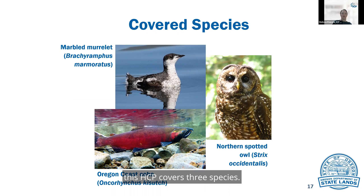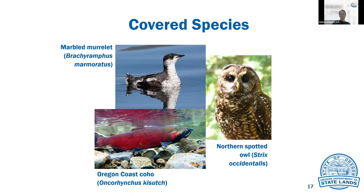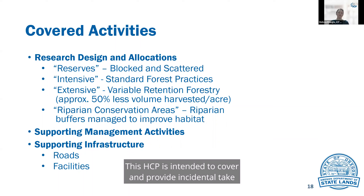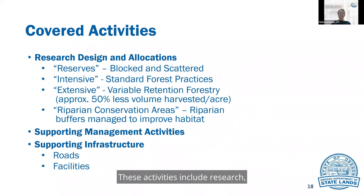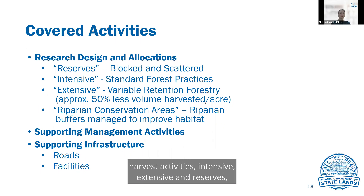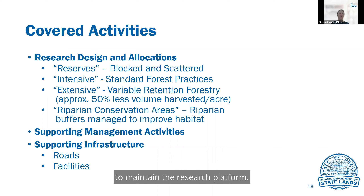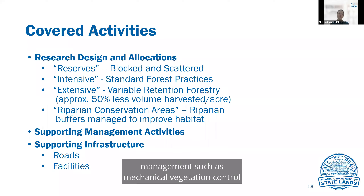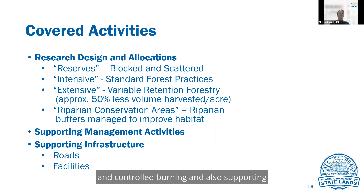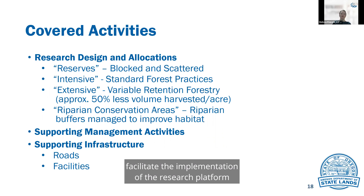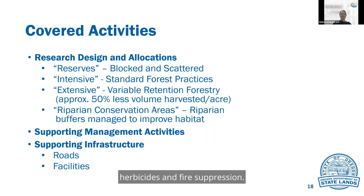Based on those criteria, this HCP covers three species: marbled murrelet, northern spotted owl, and Oregon coast coho. This HCP is intended to cover and provide incidental take authorization for research activities, as well as those activities needed to carry out the conservation strategy. These activities include research design and allocation, including research actions; harvest activities — intensive, extensive, and reserves; stand management activities that will be utilized to maintain the research platform; supporting management activities; and supporting infrastructure, which includes development and maintenance of roads, landings, drainage structures, quarries, and research facilities required to facilitate implementation of the research platform and programs. Some activities are not covered by this HCP, including recreation, herbicides, and fire suppression.